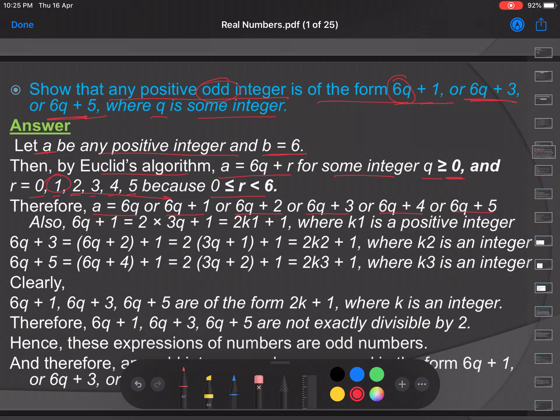Out of these, 6q plus 1 equals 2 times 3q plus 1, which is of the form 2k1 plus 1 where k1 is any positive integer. Also, 6q plus 3 equals 6q plus 2 plus 1. Taking 2 as common: 2 times (3q plus 1) plus 1, which can be written as 2k2 plus 1 where k2 is any integer.